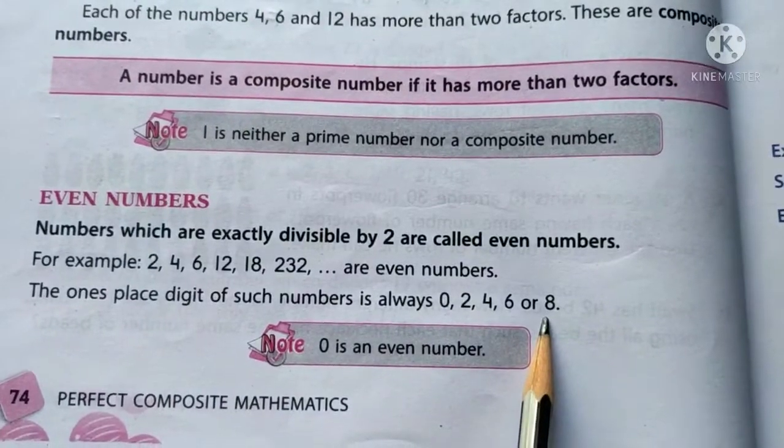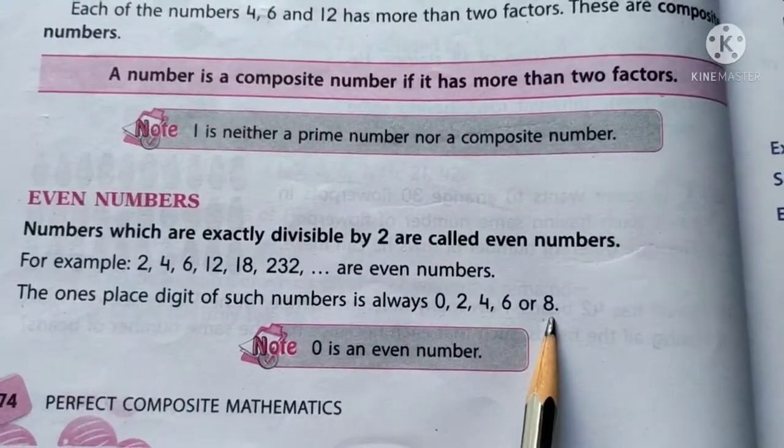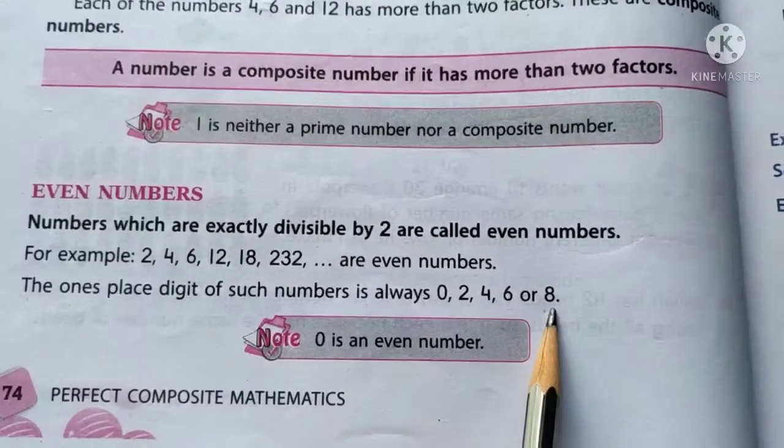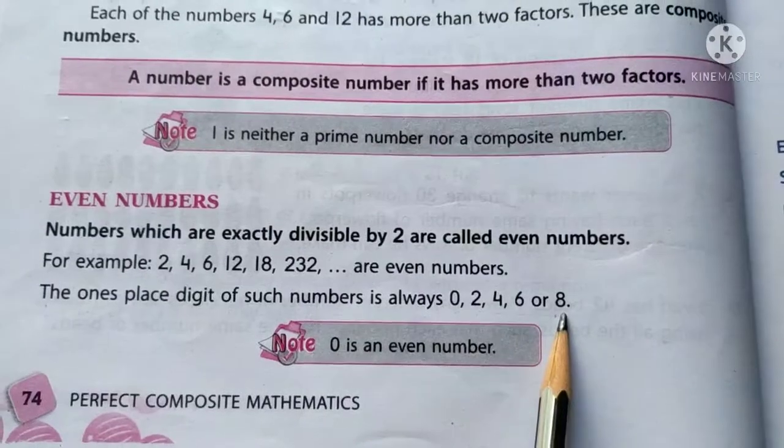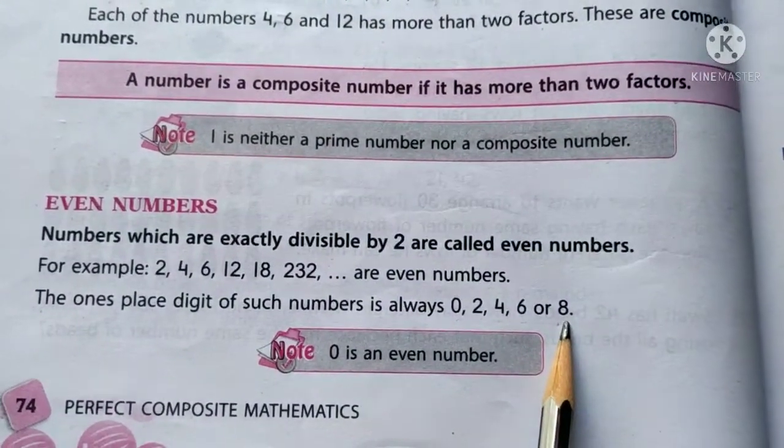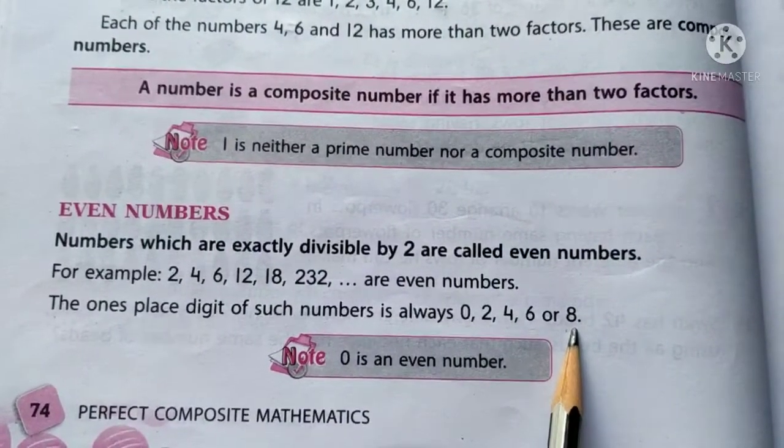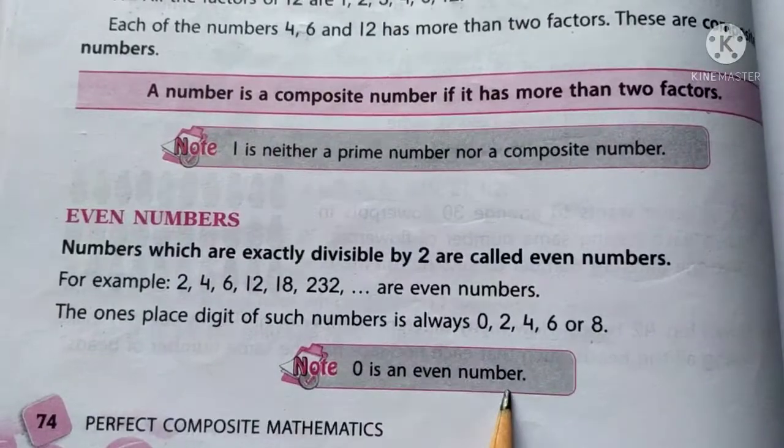Kisih bhi number ke once placed per agar 0, 2, 4, 6 ya 8 hai, toh wou ek even number hai. Or even number 2 se divide ho jate hai, bina koi remainder chhođe. Iska matlab, joh bhi number 2 se divide hoonay ke baad 0 remainder chhođta hai, wou even number ho ta hai. One point to note is that 0 is an even number.